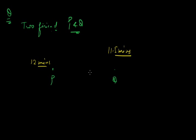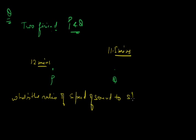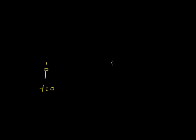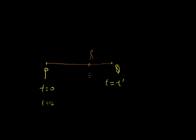The question is: what is the ratio of speed of sound to speed of Q? P is here and fired the bullet at T equals 0. Q is at some position. At T equals T-dash, Q hears the sound. At T equals 12, the second bullet is fired. Obviously Q is not at the original position, and it's clear Q is moving towards P because it heard the sound in less time — 11.5 minutes. So Q must be coming closer to P.